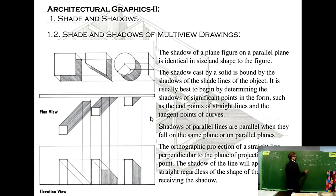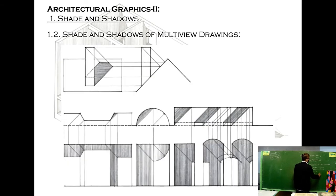The shadow of a plane figure on a parallel plane is identical in size and shape to the figure. The shadow cast by a solid is bound by the shadows of the shade lines of the object. It is usually best to begin by determining the shadows of significant points in the form, such as the end points of straight lines and the tangent points of curves. Shadows of parallel lines are parallel when they fall on the same plane or on parallel planes. The orthographic projection of a straight line perpendicular to the plane of projection is a point. The shadow of the line will appear according to the shape of the surface receiving the shadow.